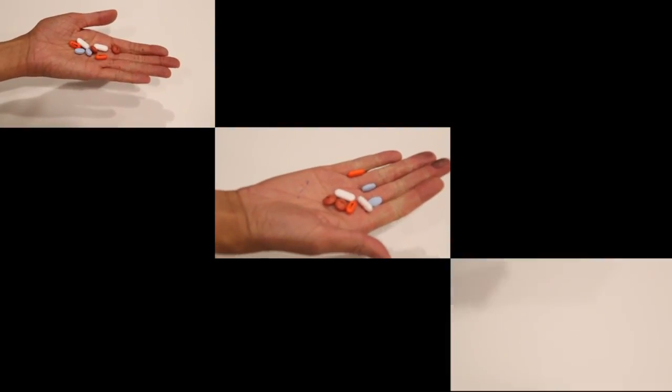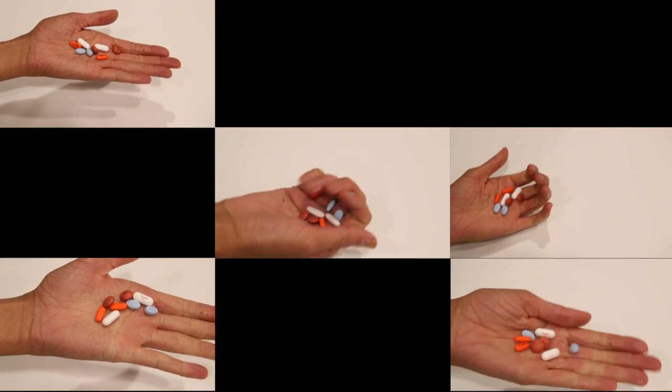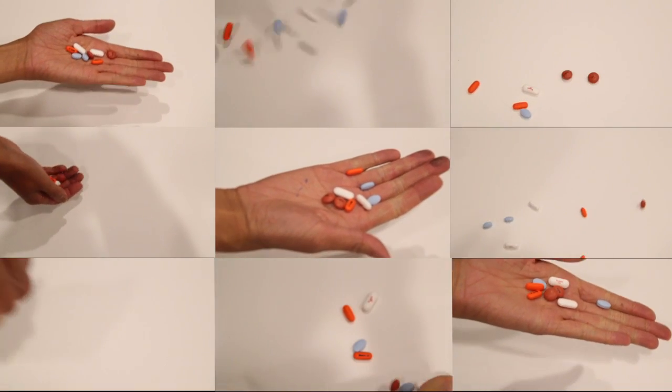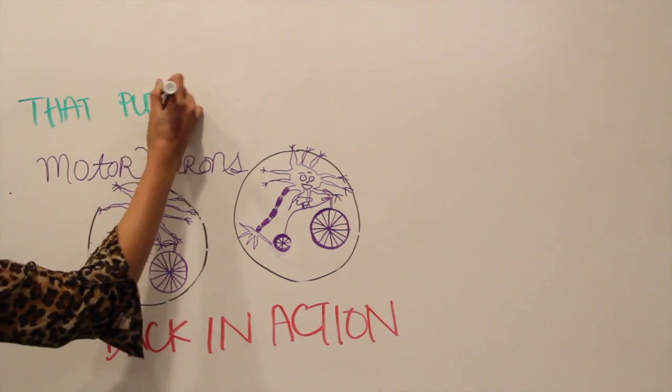We can then expose these dying motor neurons to thousands of potential drugs to see if any of them stop or slow the cell's degeneration in the petri dish and essentially put the motor neurons back in action.